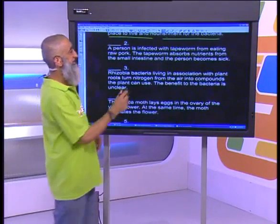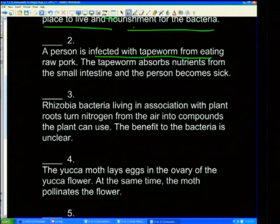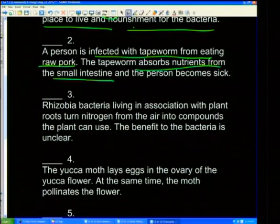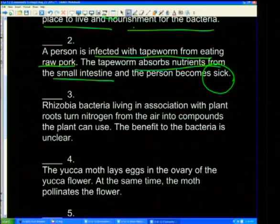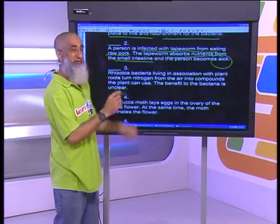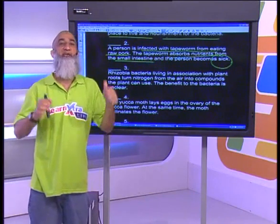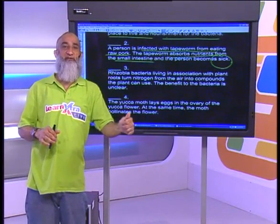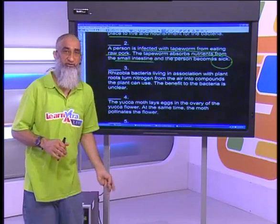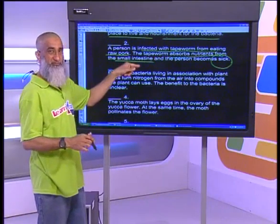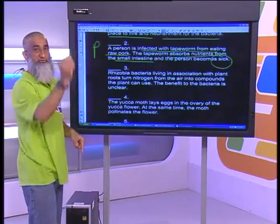A person is infected with tapeworm from eating raw pork. The tapeworm absorbs nutrients from the small intestine and the person becomes sick. Notice how we underline the key words — that's important. The person becomes sick, in other words he is being harmed. The tapeworm is benefiting — it gets a free ride, free shelter, no rent, free food, doesn't have to go and find its own chow. One is benefiting, the other is harmed: parasitism.